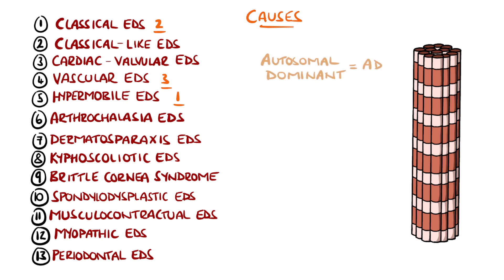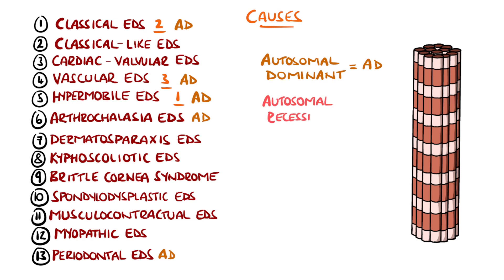Hypermobile EDS is inherited in an autosomal dominant pattern, as are the classical, vascular, atheroclasia, and periodontal subtypes. The remaining subtypes are autosomal recessive.